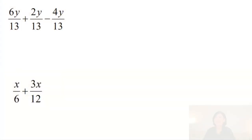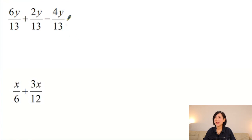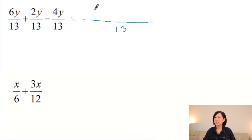Well done. Now I think you have a concrete concept of algebra. Let's do our algebraic fractions. We've got 6y/13 + 2y/13 − 4y/13. Luckily they all have the same denominator, so all you need to do is add and subtract all the numerators. You need to collect the like terms: 6y + 2y − 4y = 4y. That's all.